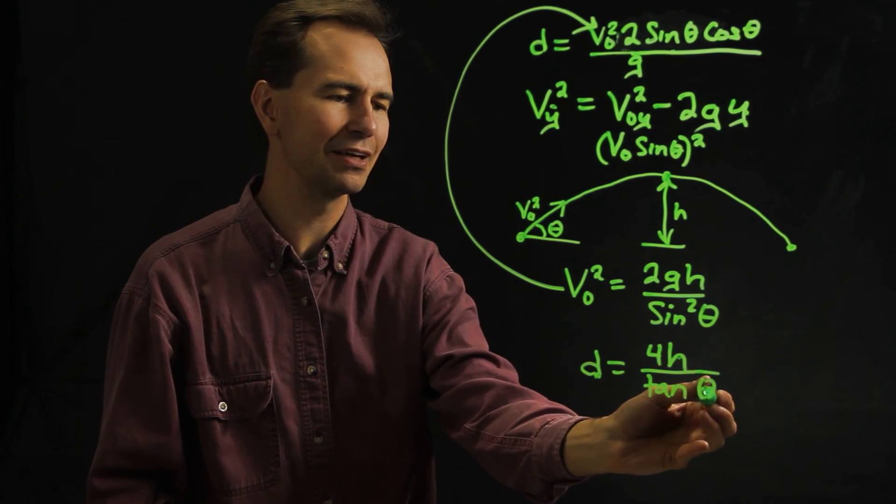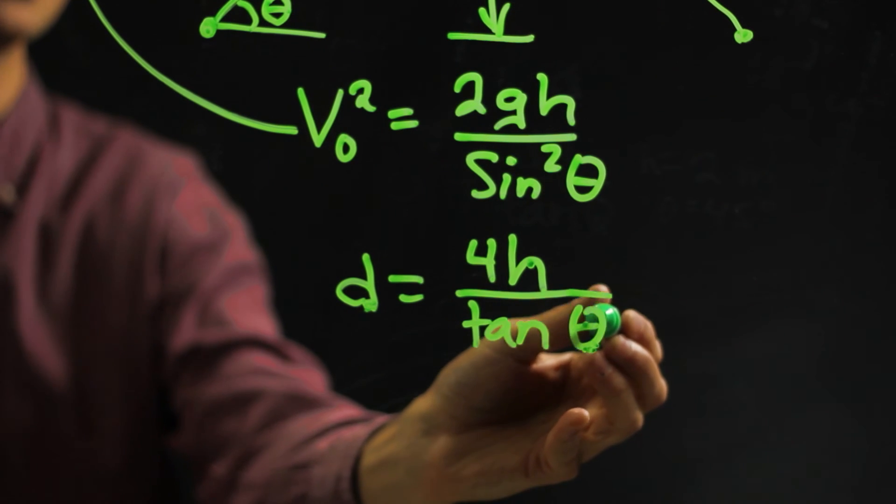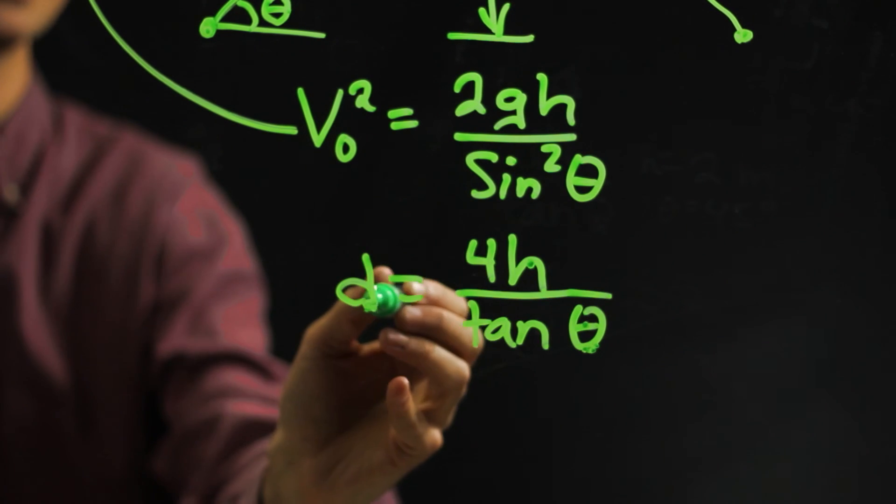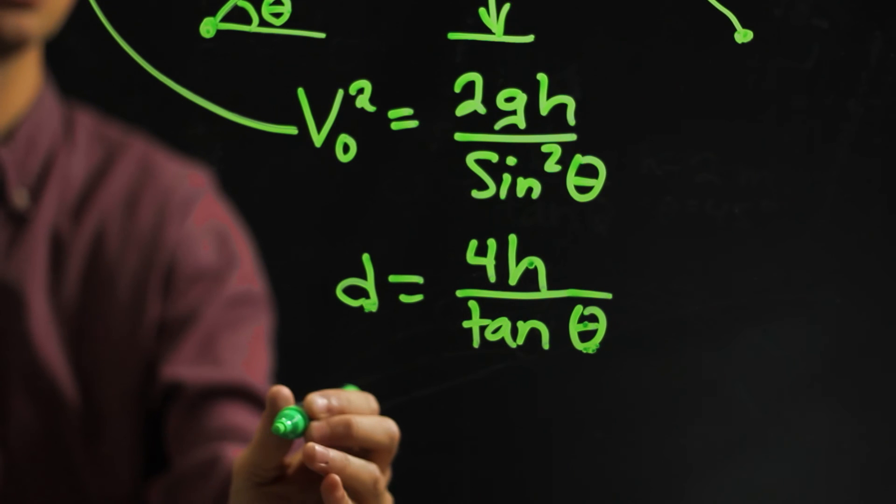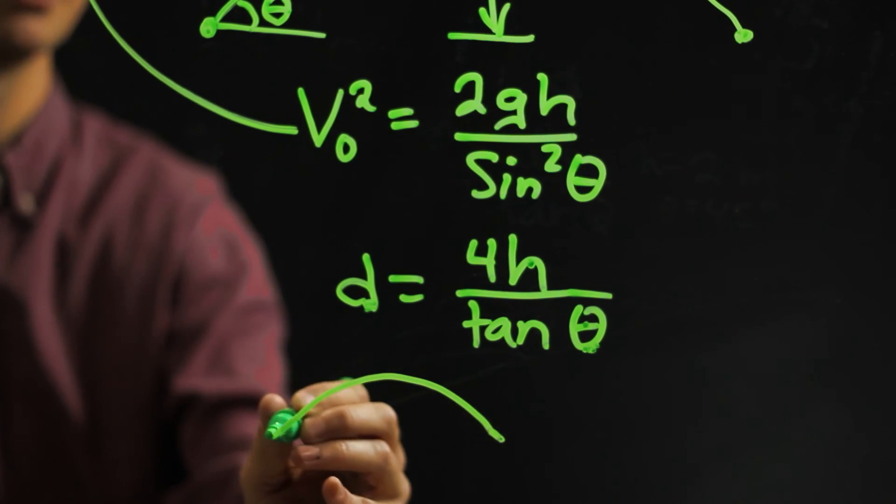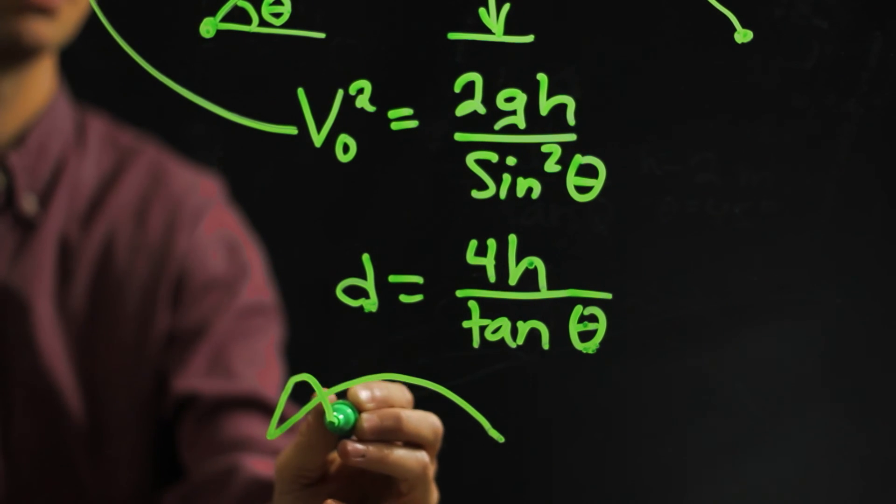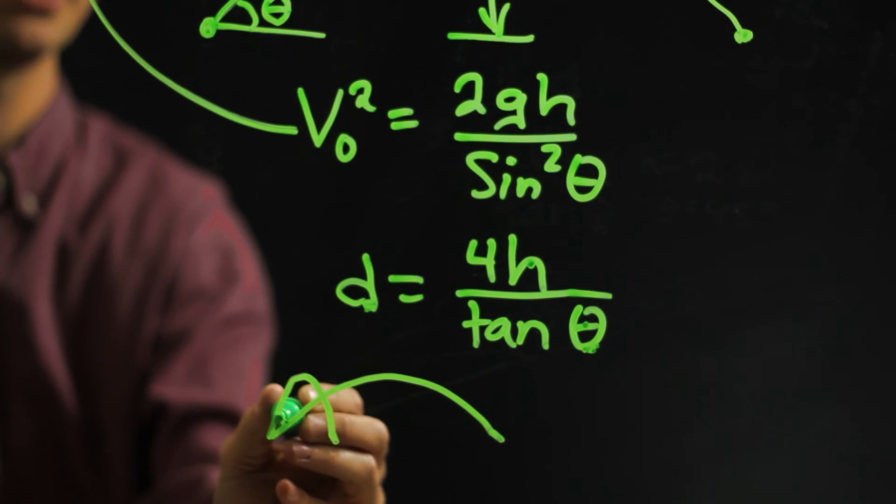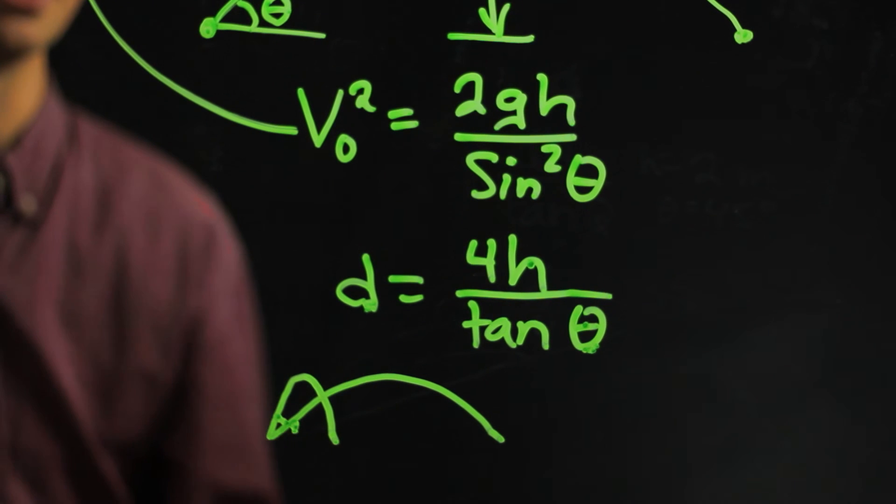Same thing with the angle. You notice that if the angle gets bigger and bigger, this predicts that it's going to go a shorter and shorter distance. So if it goes like this, it's going to go farther than if it goes like this. That's at a higher angle, and that's at a smaller angle.